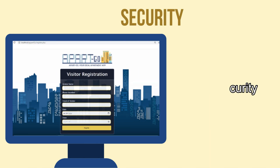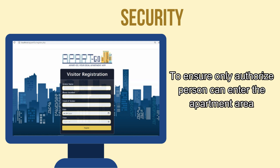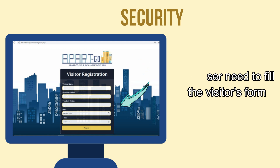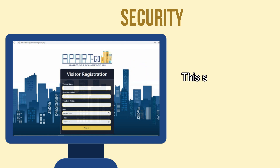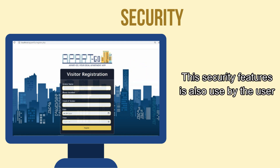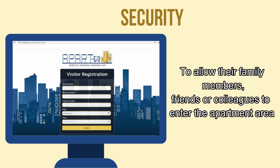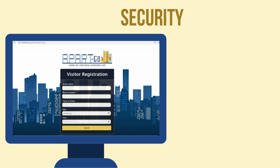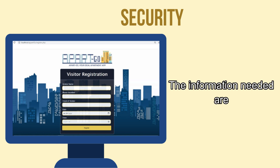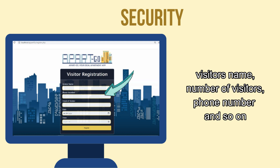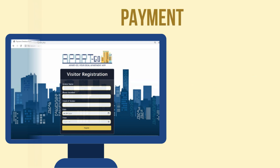As for security, to ensure only authorized persons can enter the apartment area, the user needs to fill in the visitors' form. This security feature is also used by the user to allow their family members, friends, or colleagues to enter the apartment area. The information needed are the visitor's name, number of visitors, phone number, and so on.